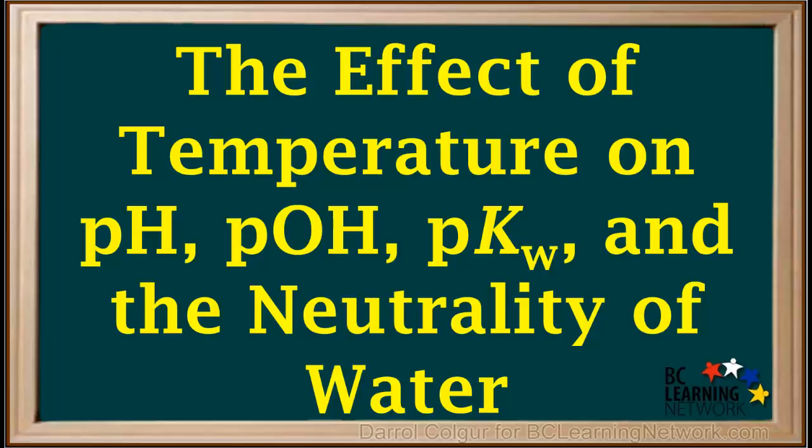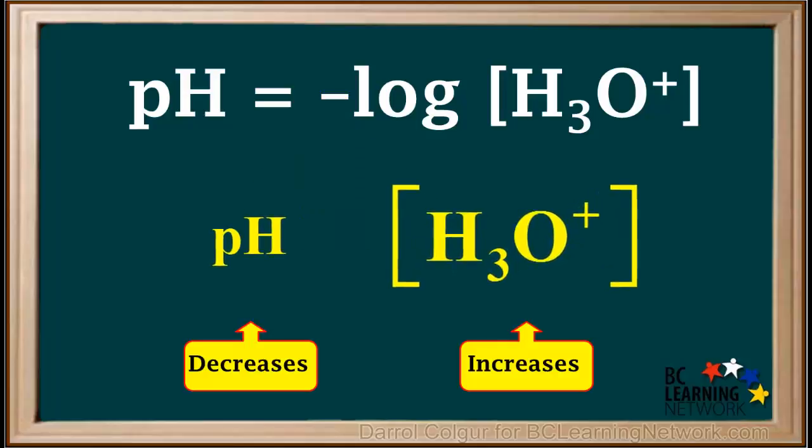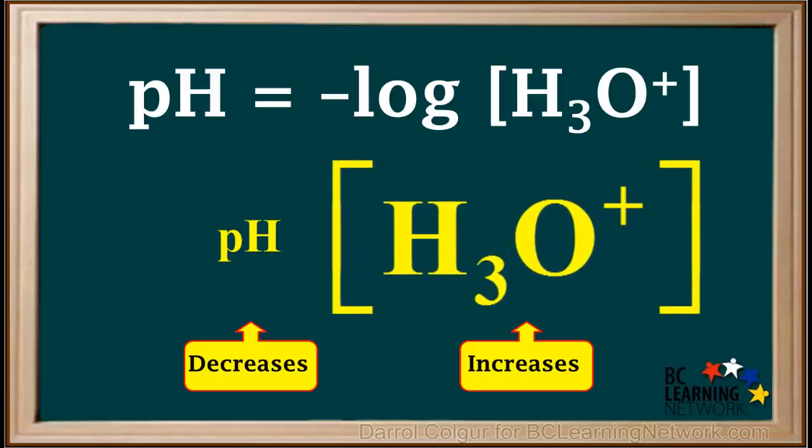Here we'll consider how a change in temperature will affect the pH, pOH, pKW, and neutrality of pure water. We'll do a quick review of the relationship between hydronium ion concentration and pH. Because of the negative sign, the pH and the hydronium ion concentration have opposite trends. So as we increase the hydronium ion concentration, the pH decreases.